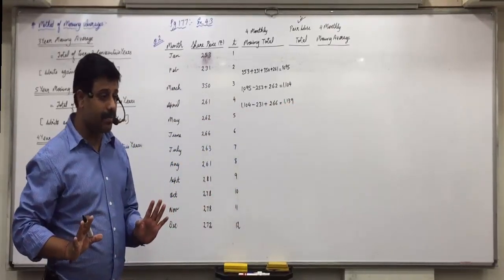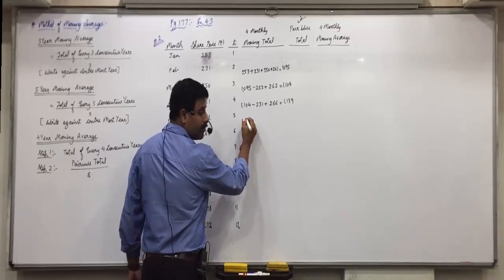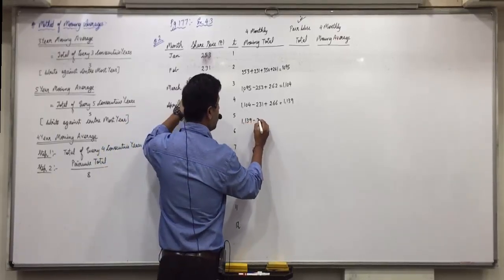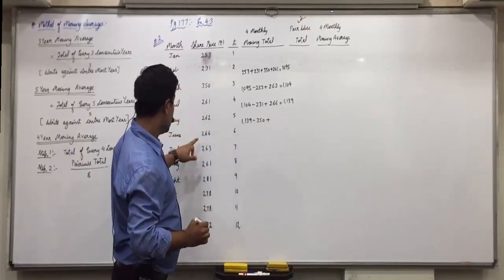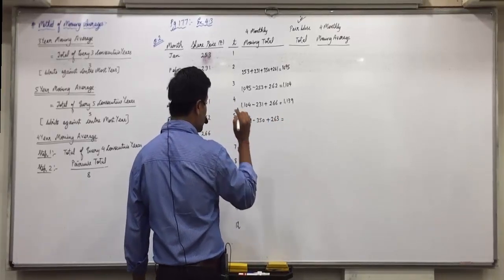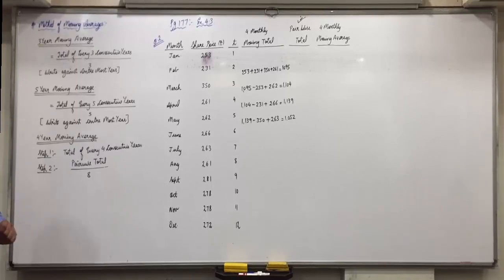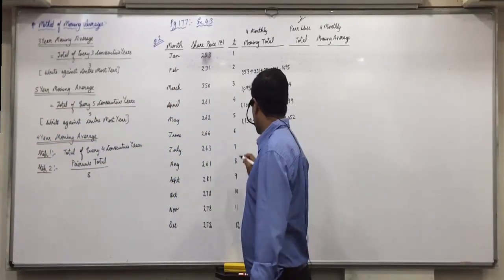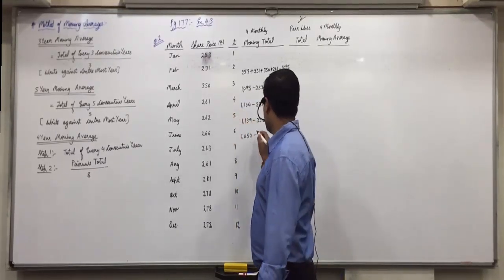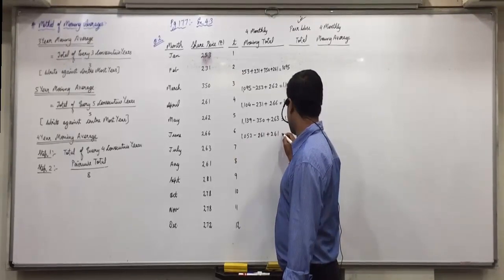Is everyone able to follow this? Can you tell me the next one? 1139 minus 350, then plus 263 after 266, gives 1052. Any doubts? Then 1052 minus 261 plus 261 — it remains the same, 1052.